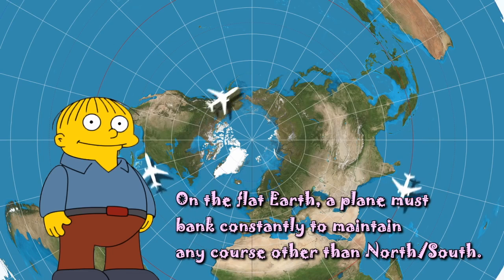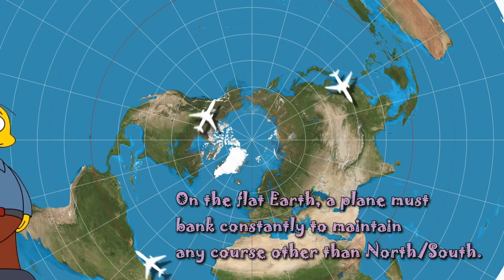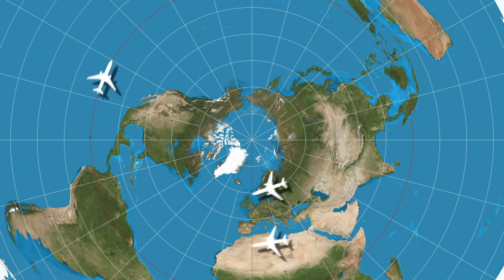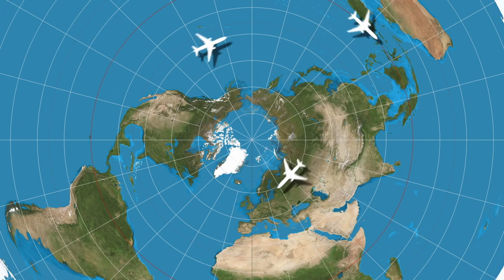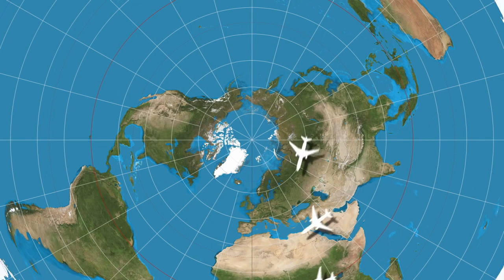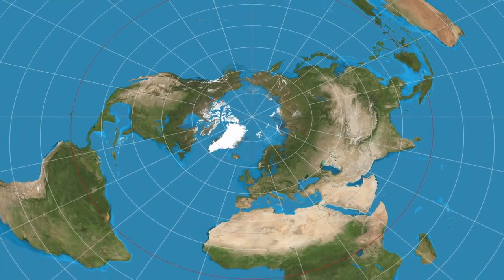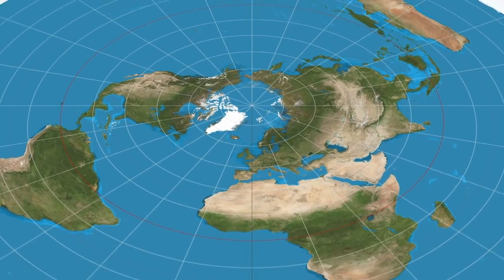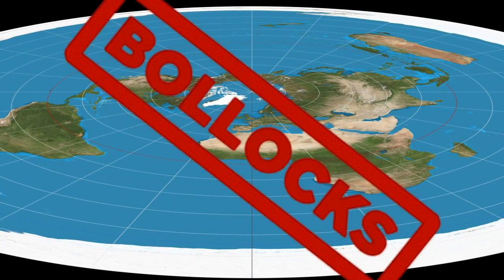And remember, the further north the aircraft is, the more pronounced that bank is going to have to be because the tighter the arc is going to be. And yet, not even Flat Earthers in North America and Canada have noticed this taking place and waved it around gleefully as proof of their codswallop. If Flat Earthers had passports and a brain, they would have noticed that none of these effects happen and never will, because this is bollocks.